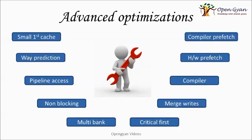Further optimization mechanisms include critical word first, merging writes, compiler optimizations, hardware prefetch, and compiler prefetch. Critical word first means data is given to the CPU as soon as it is available, rather than waiting to fill an entire page first, making data available faster. Merging writes: if the cache is dirty by 10 bytes and the CPU sends another 20 bytes to write, instead of writing twice, both writes are merged into a single efficient write.